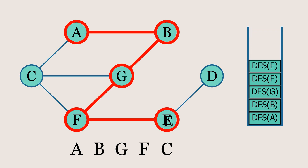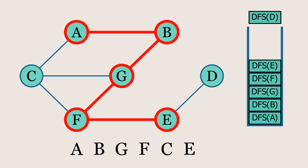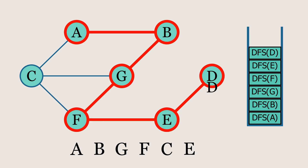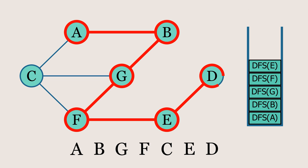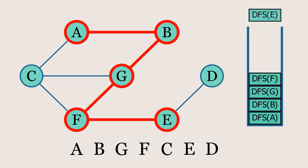From node E, the algorithm will move to its only unvisited neighbor, which is node D. Since node D has no unvisited neighbors, the algorithm will begin backtracking from here, checking for any unvisited nodes as it retraces its steps.